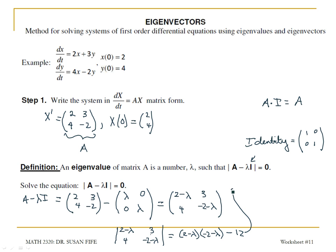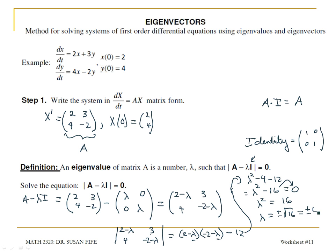Let me bring this up here so I have more space. Multiplying these out: lambda squared, then negative 2 lambda and positive 2 lambda cancel out, leaving negative 4 and negative 12, giving me lambda squared minus 16. Setting this equal to 0, I get lambda squared equals 16, so lambda equals plus or minus 4. Lambda 1 equals 4 and lambda 2 equals negative 4 are the eigenvalues.